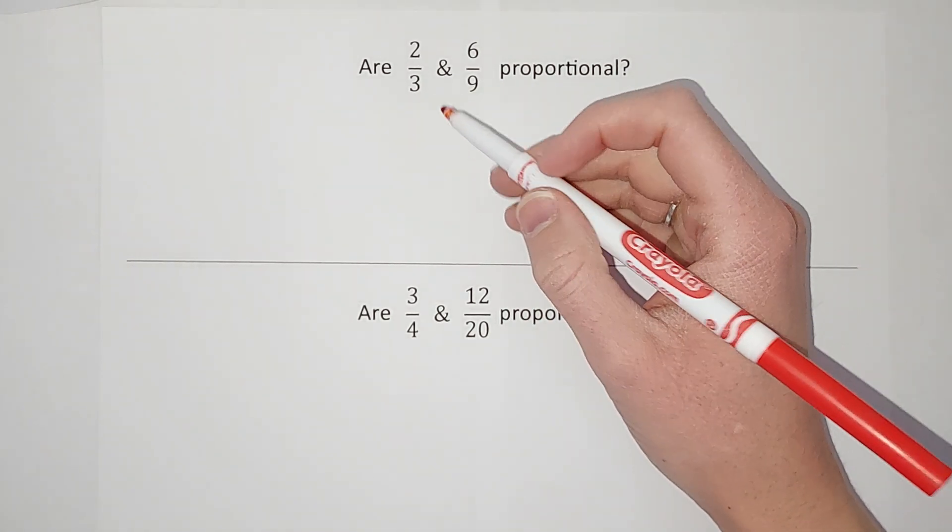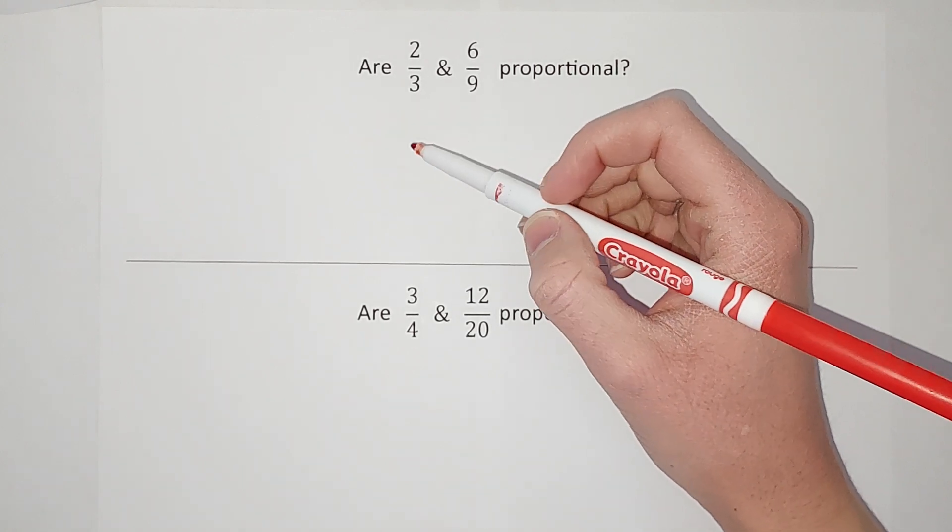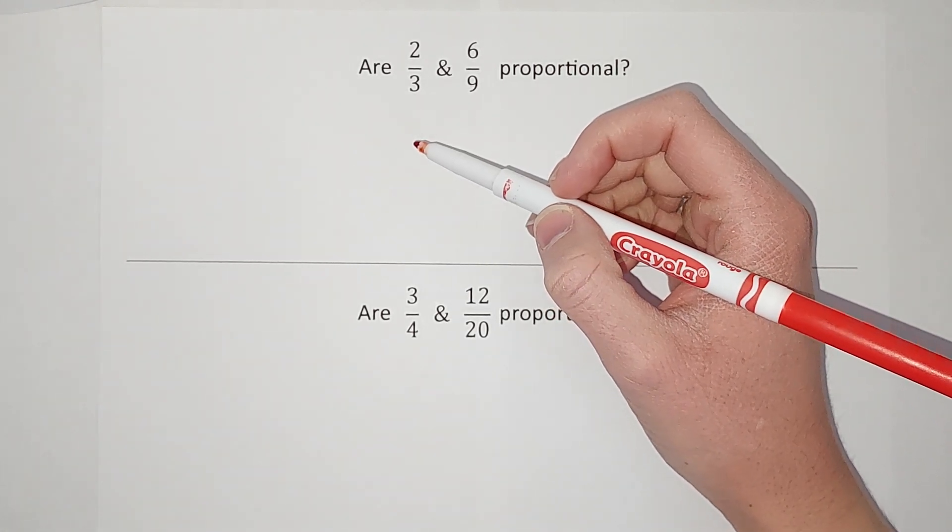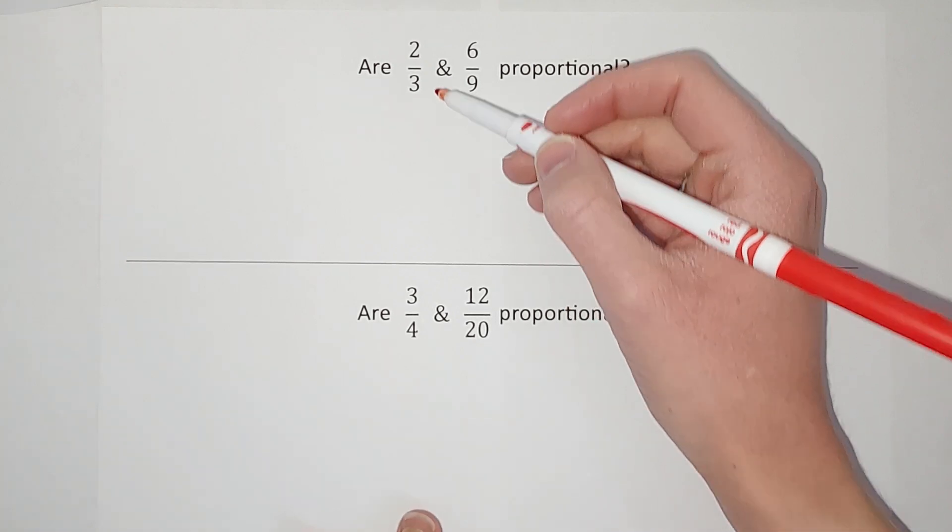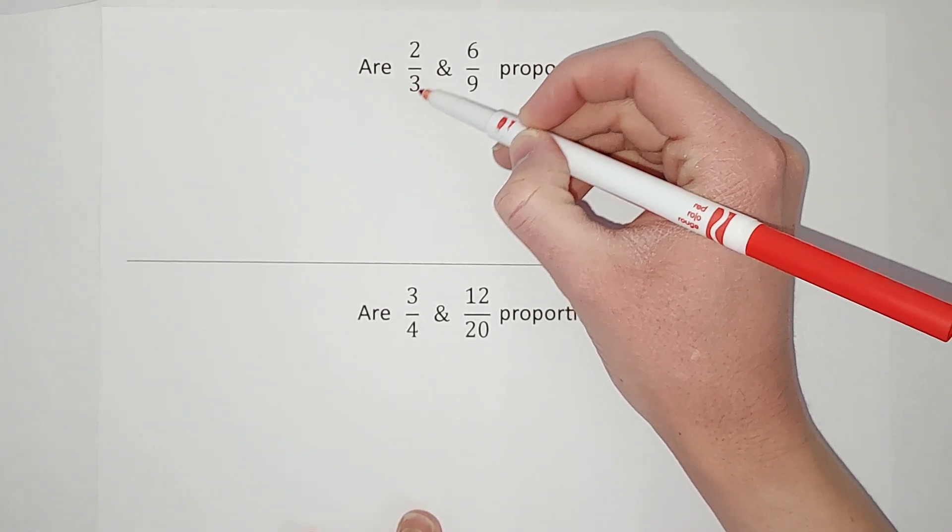To tell if two fractions are proportional, it's actually very simple. We do what we call cross products. What we do is we're going to go from the denominator of one and multiply it to the numerator of the other.